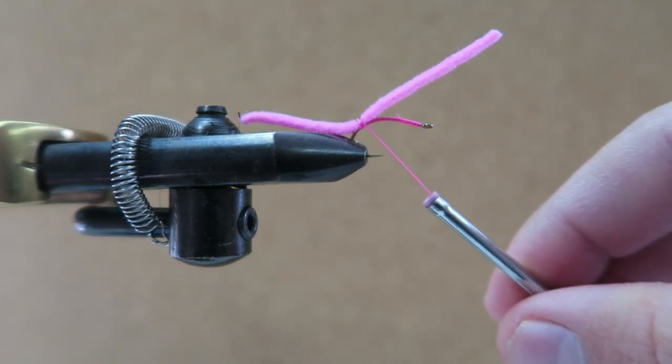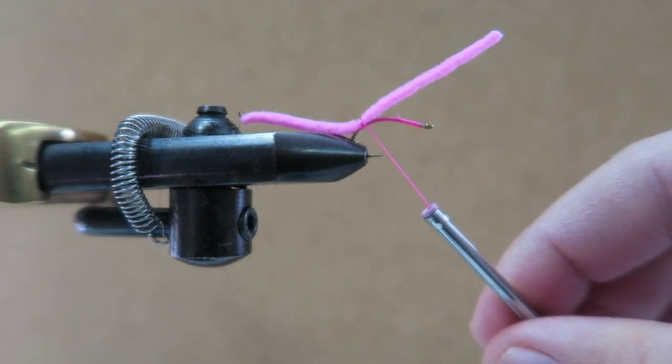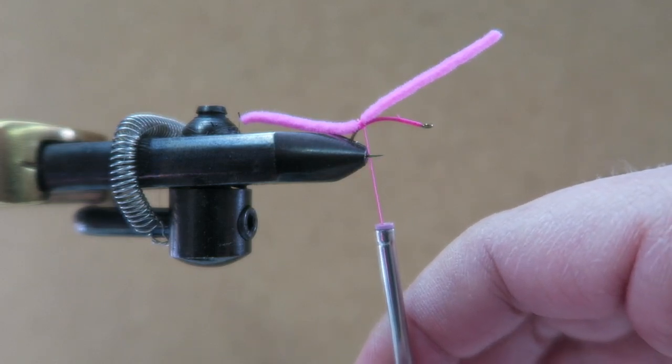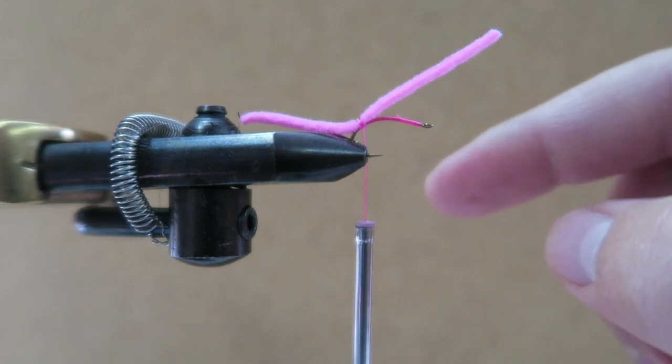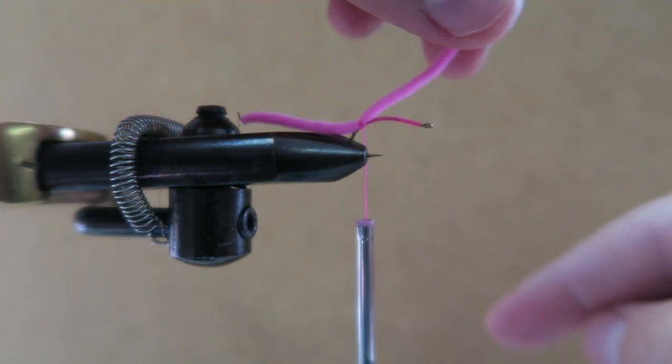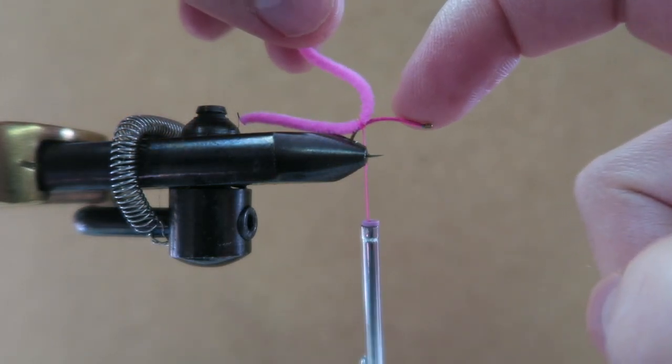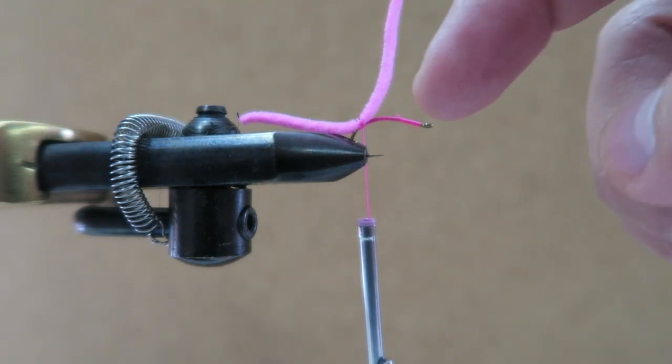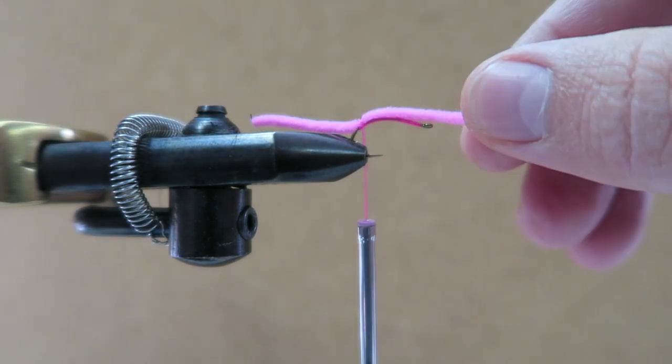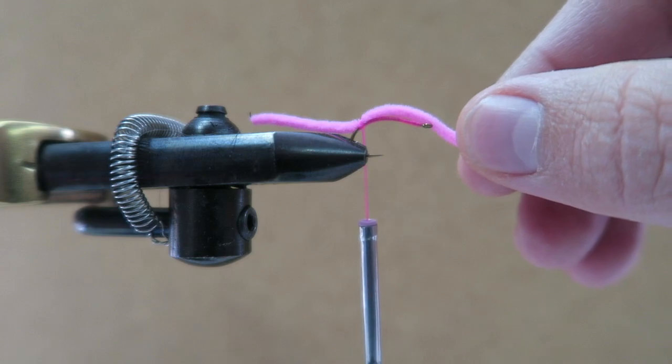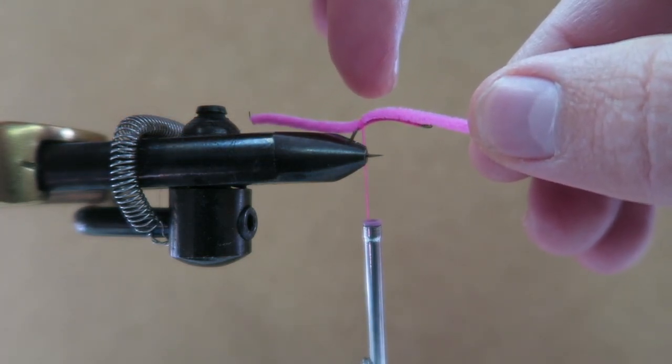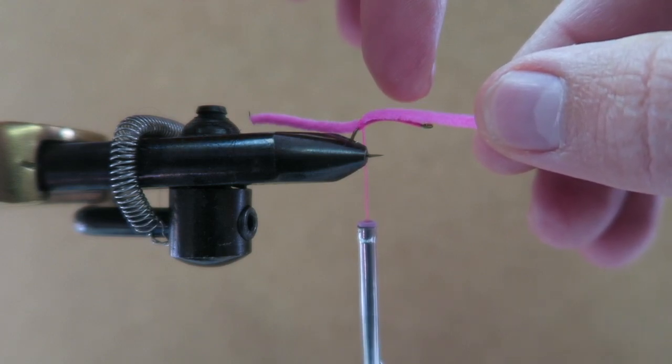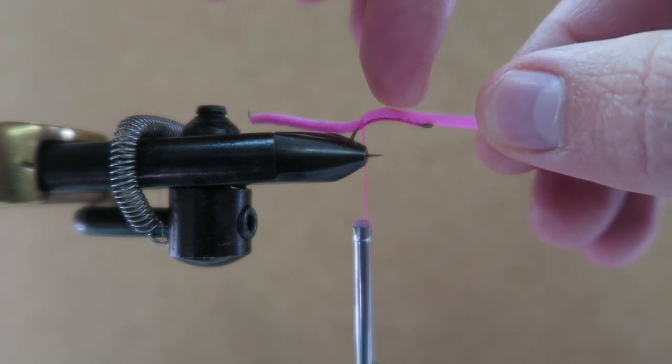From here there's a couple different ways you can do it. You can either hold this up out of the way, run your thread back up to the eye, and just tie it off there. Or you can go up and over the worm and make like a rib out of the thread and then just finish it off up there.